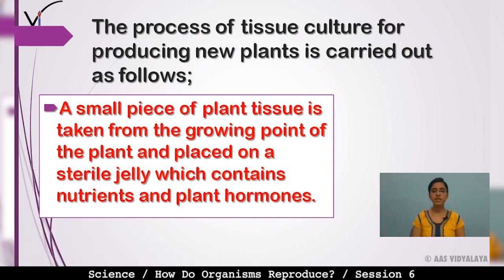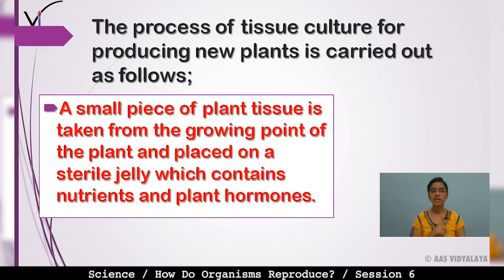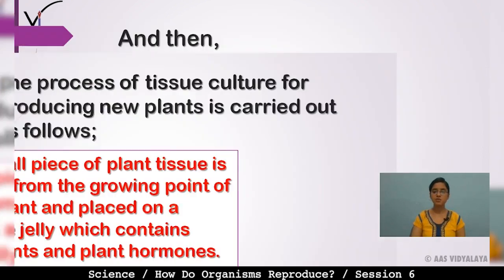The process of tissue culture for producing new plants is carried out as follows. A small piece of plant tissue is taken from the growing point of the plant and placed on a sterile jelly which contains nutrients and plant hormones.